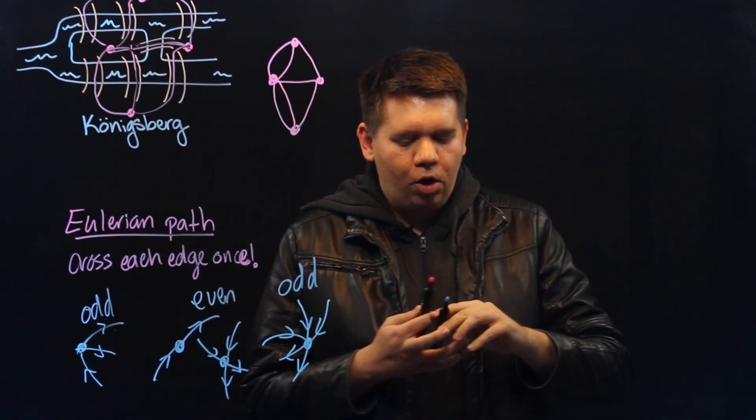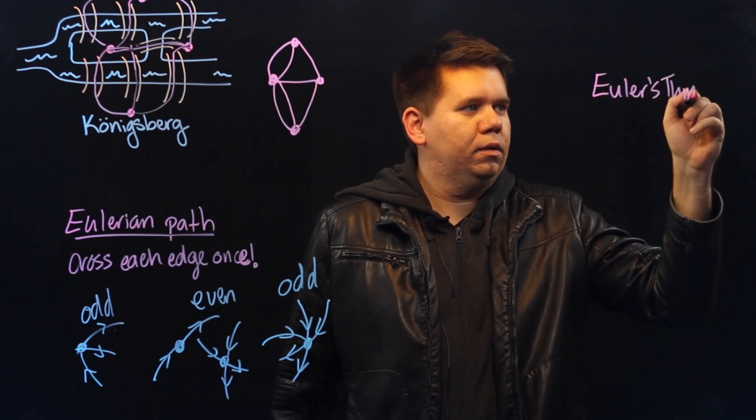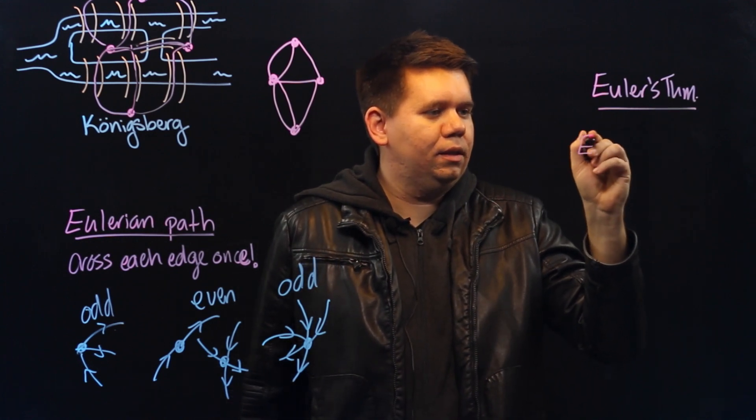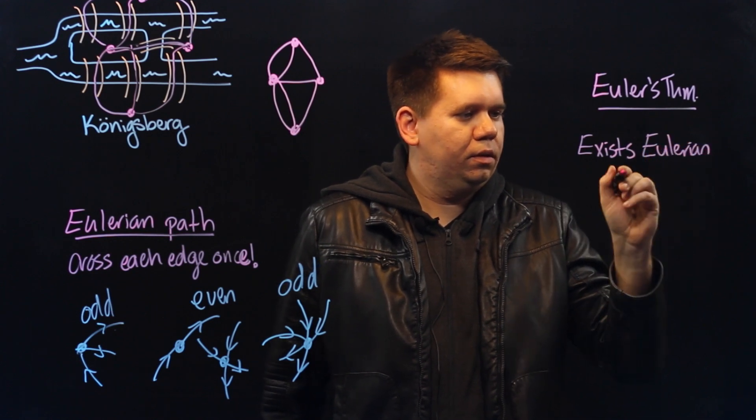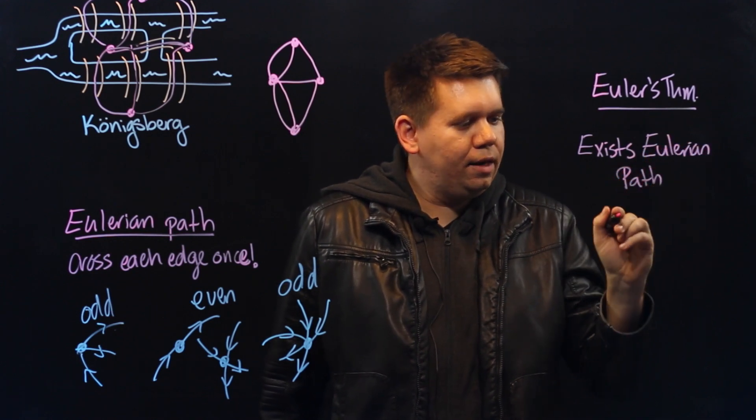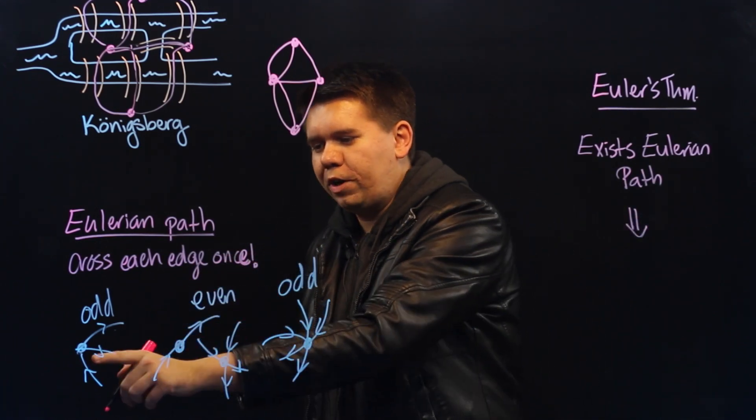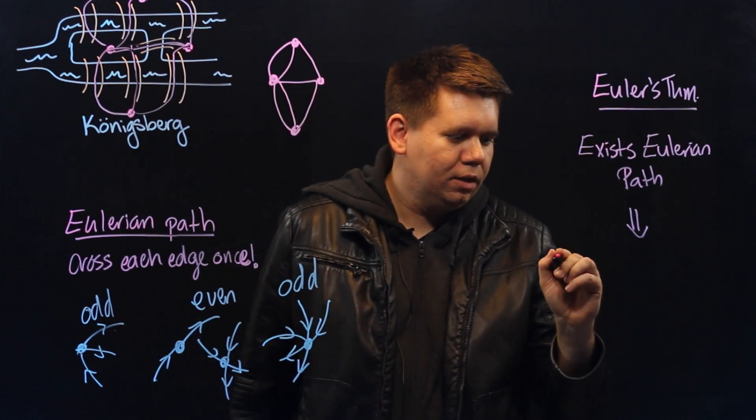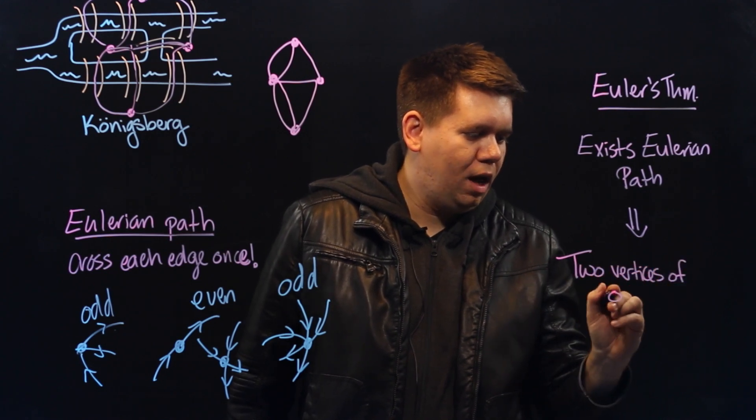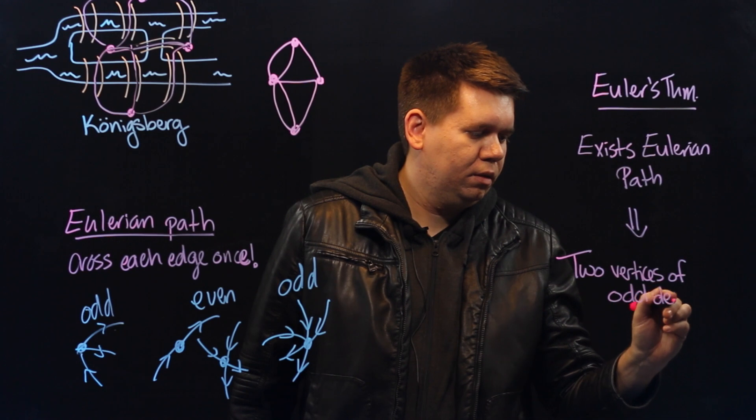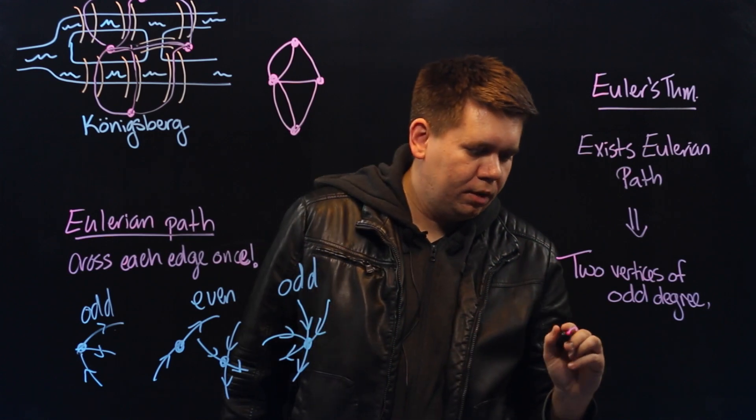That is, Euler's insight, which we now call Euler's theorem, is that if there exists an Eulerian path, then your graph must be of this special nature. Where you have a starting and ending vertex that is of odd degree. So you must have two vertices of odd degree. And all the other vertices in between must be even.